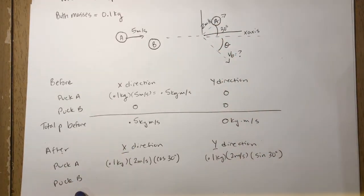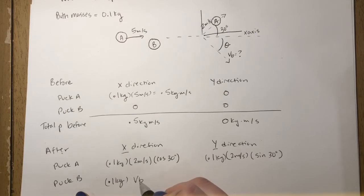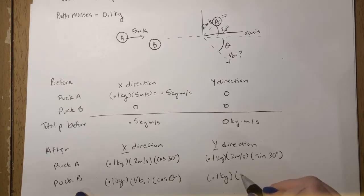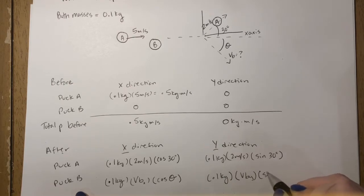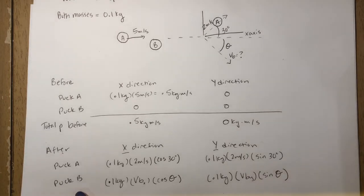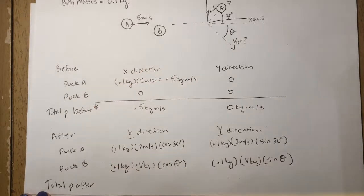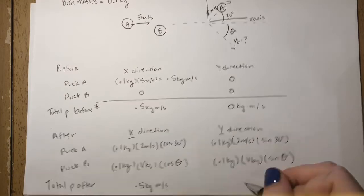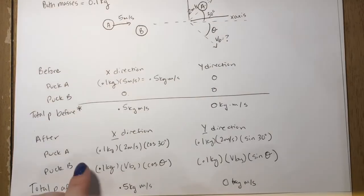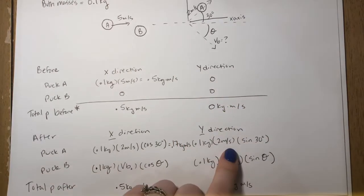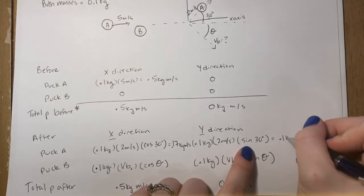Don't forget to calculate those values. We do not know the velocity of puck B in the x direction, and we do not know the angle. Same thing in the y direction. We do, however, know the momentum after the collision because it is the same as the momentum before the collision. And before I forget, we need to calculate the momentum of puck A after the collision — you just multiply across, and you should get 0.17 kilograms meters per second in the x direction and 0.1 kilograms meters per second in the y.